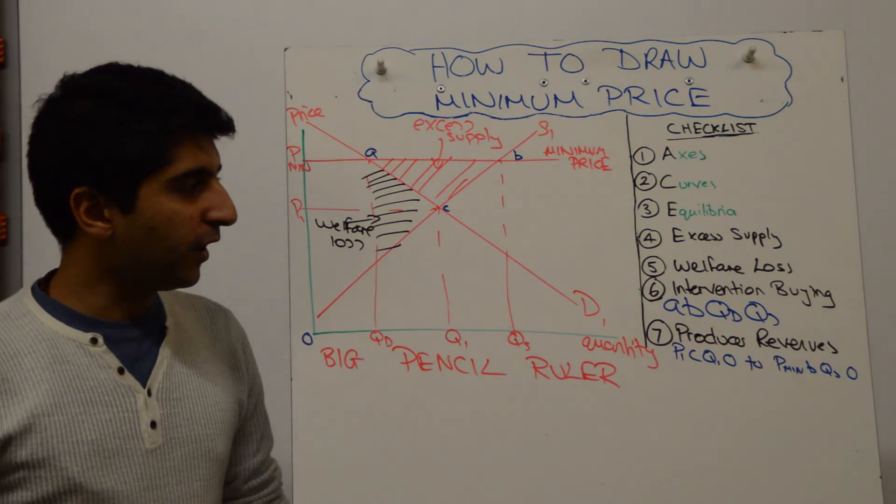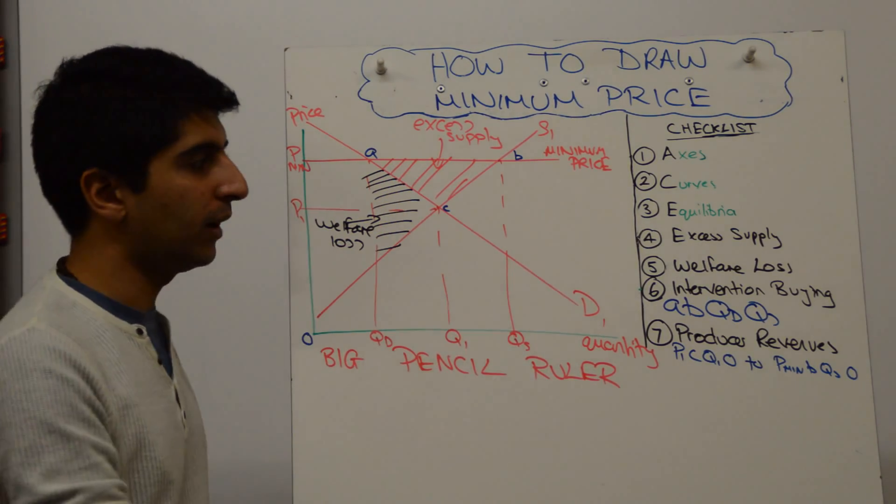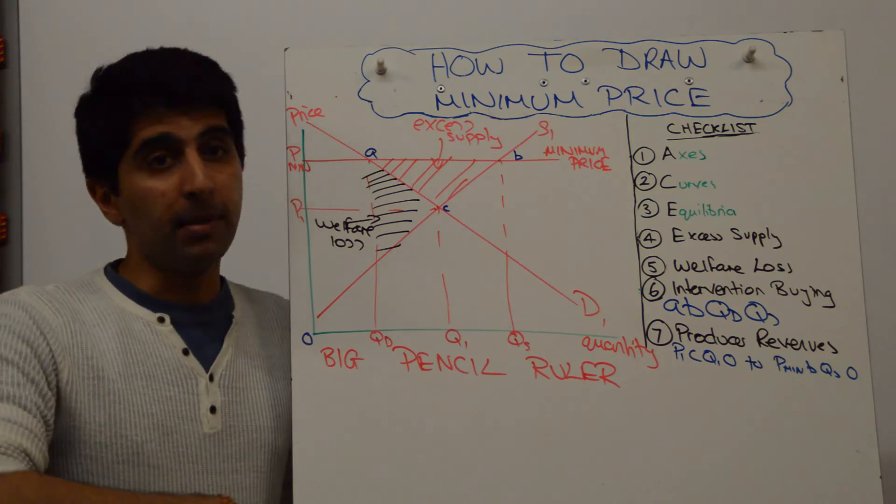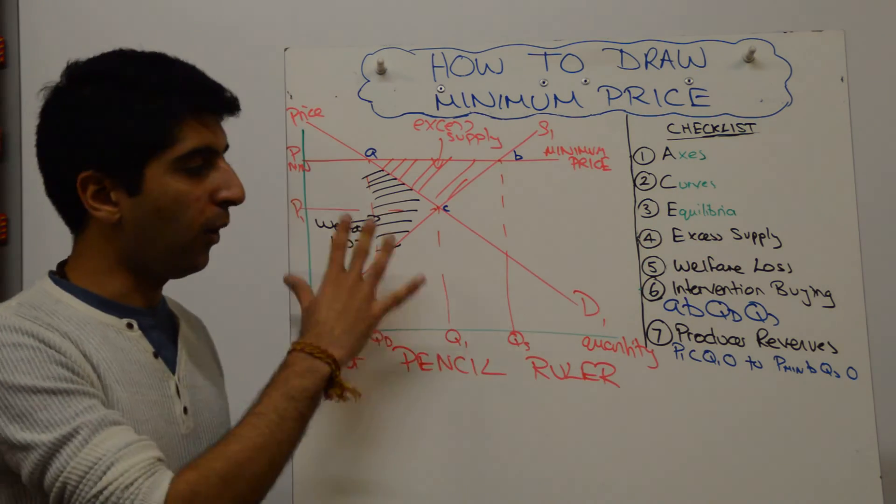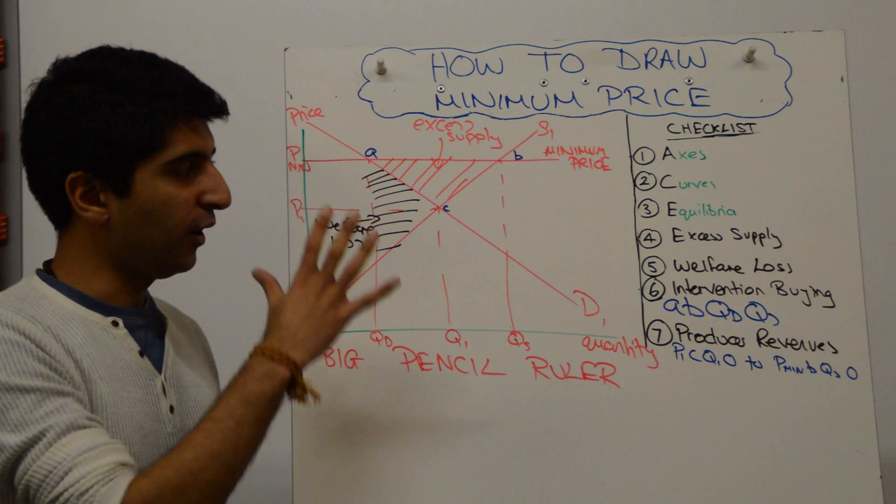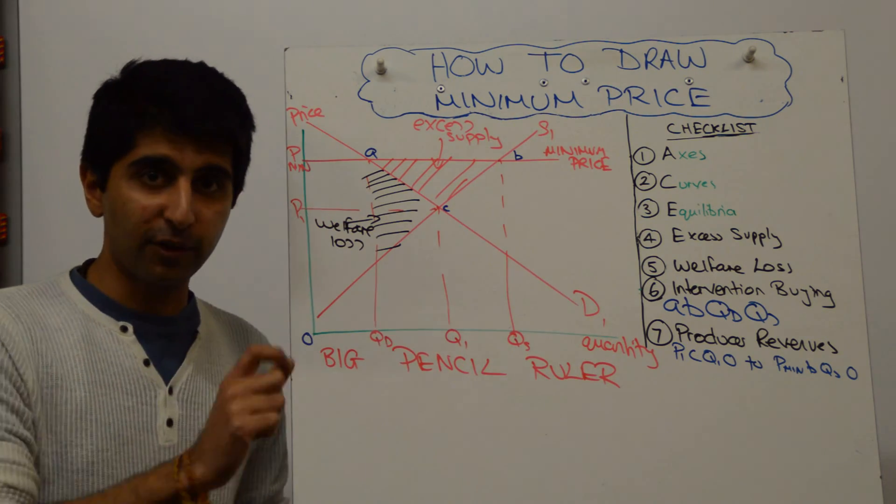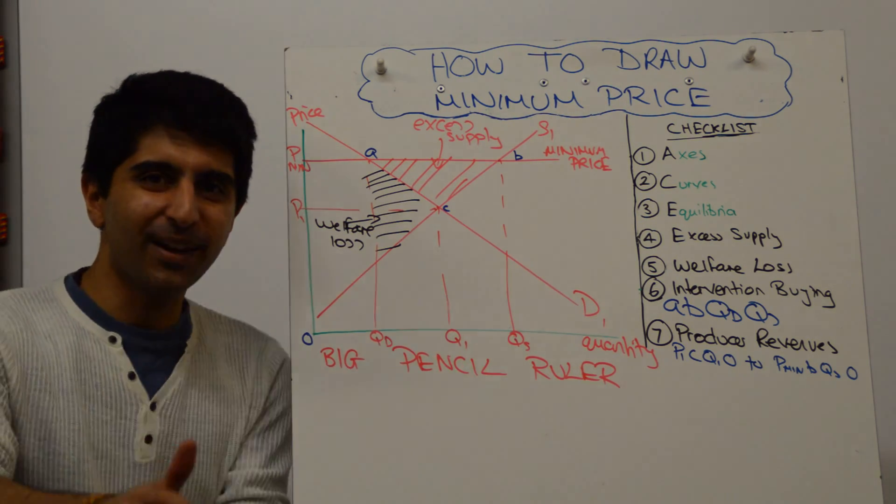So that's how you draw this diagram, folks. A lot of detail on there. You need to decide what's relevant. Not all of this might be relevant. Maybe all of it will be relevant. But in your head, you should be able to do all of that on this diagram. That's how you do it. Follow the structure, follow the methodology, and you'll be fine. Thanks for watching, folks. See you all next time.